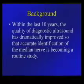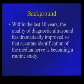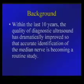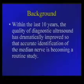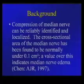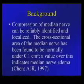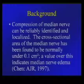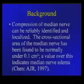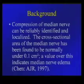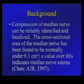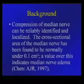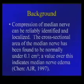Within the last 10 years, the equipment has become so sensitive that imaging of the carpal tunnel and median nerve has dramatically improved, making accurate identification of the median nerve a routine study. Compression of the median nerve can be reliably identified and localized by ultrasound. The cross-sectional diameter of the nerve somewhat correlates with EMG findings, and a cutoff of 10 square millimeters or 0.1 square centimeters has been established — patients over that number typically have carpal tunnel disease, while those under it typically have normal median nerves.